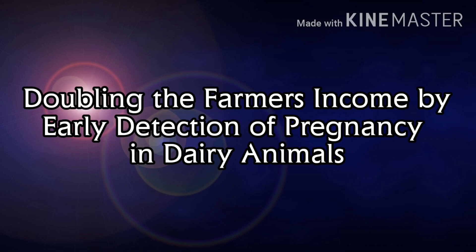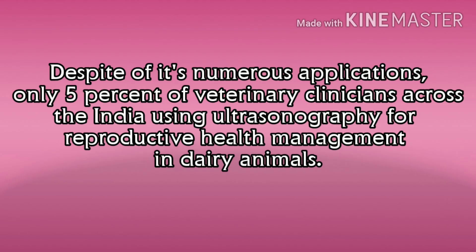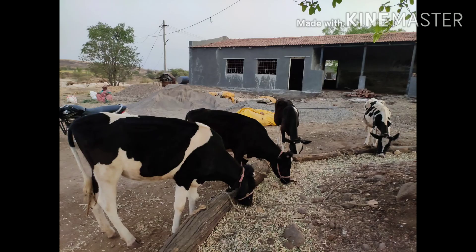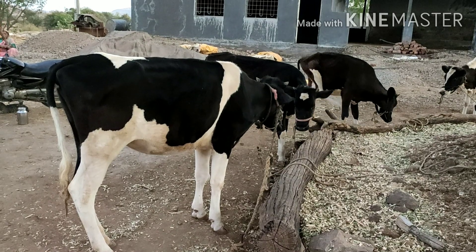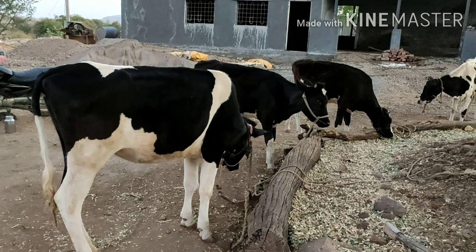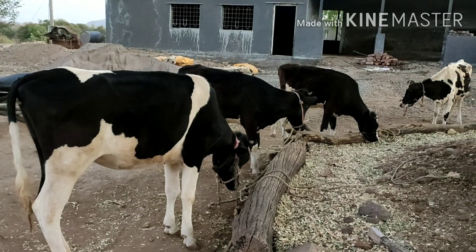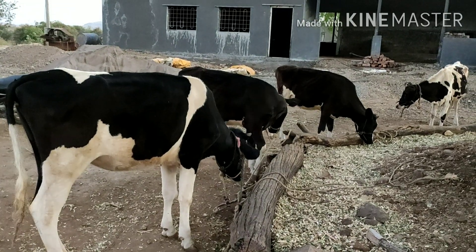Doubling the farmer's income by early detection of pregnancy in dairy animals. The use of transrectal ultrasonography to assess the pregnancy status early during gestation is among the most practical applications of ultrasound for dairy animal reproduction.